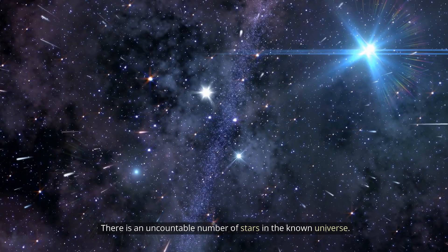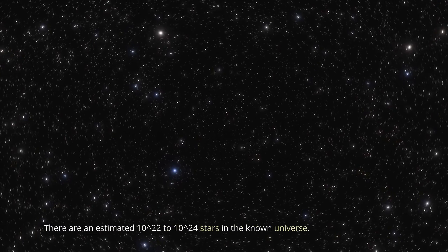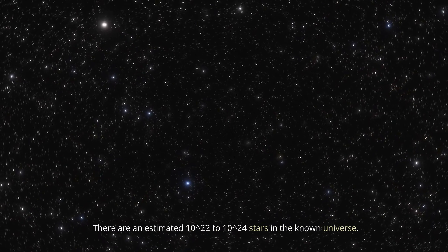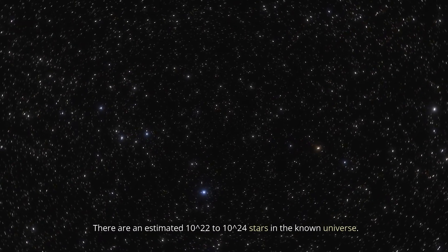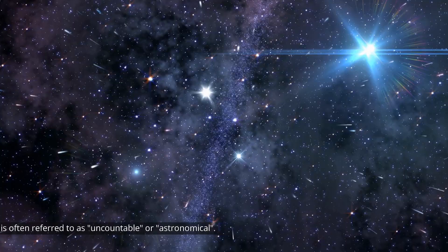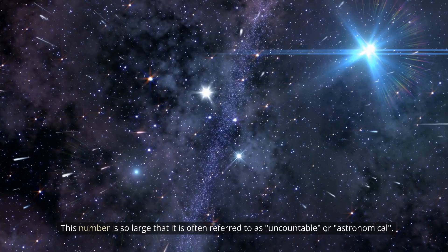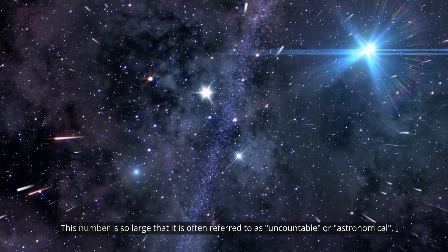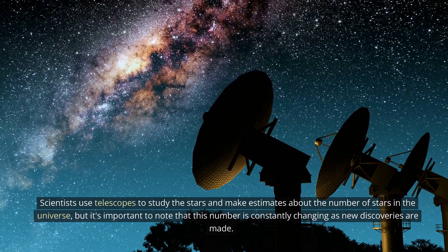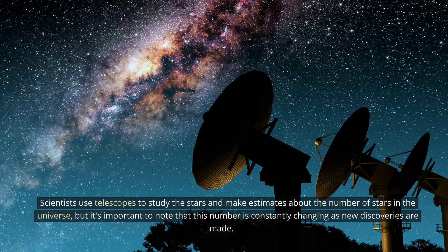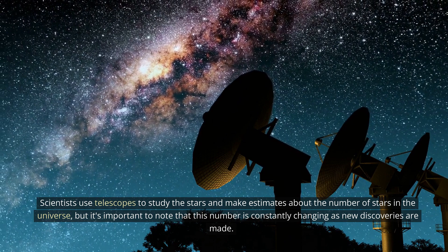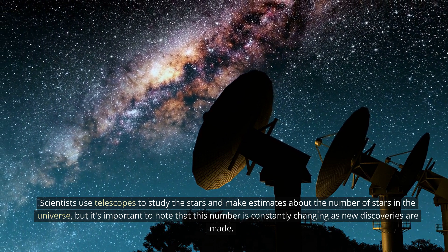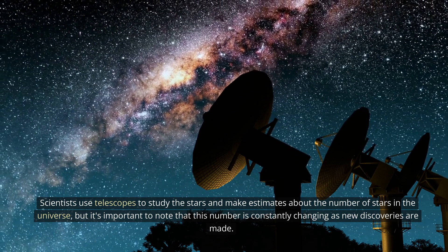4. There is an uncountable number of stars in the known universe. There are an estimated 10 to the power of 22 to 10 to the power of 24 stars in the known universe. This number is so large that it is often referred to as uncountable, or astronomical. Scientists use telescopes to study the stars and make estimates about the number of stars in the universe, but it's important to note that this number is constantly changing as new discoveries are made.